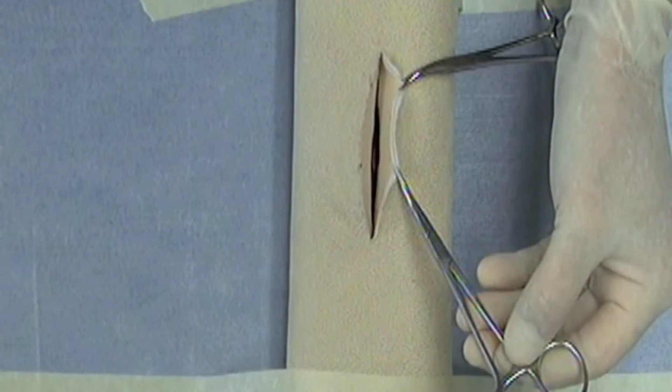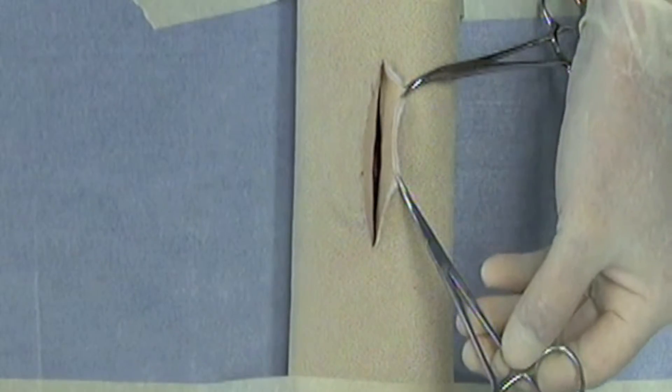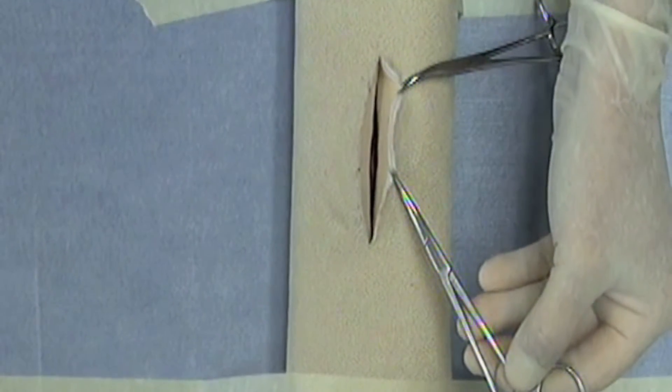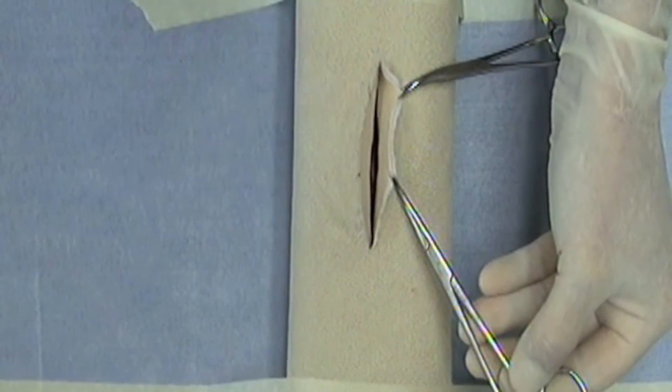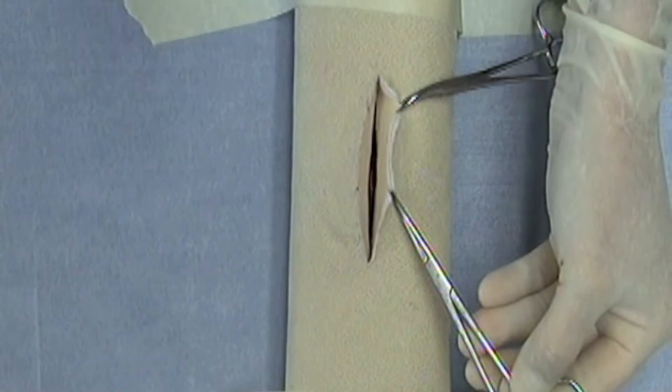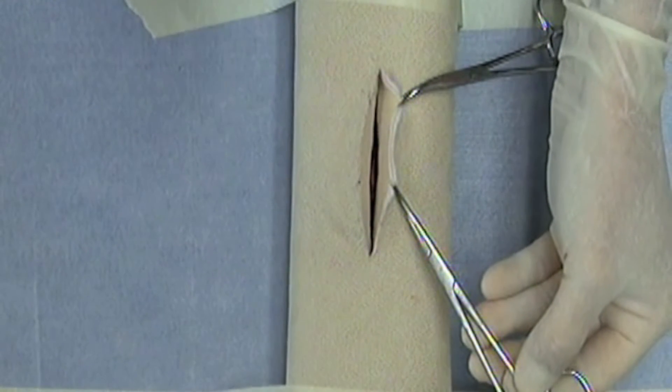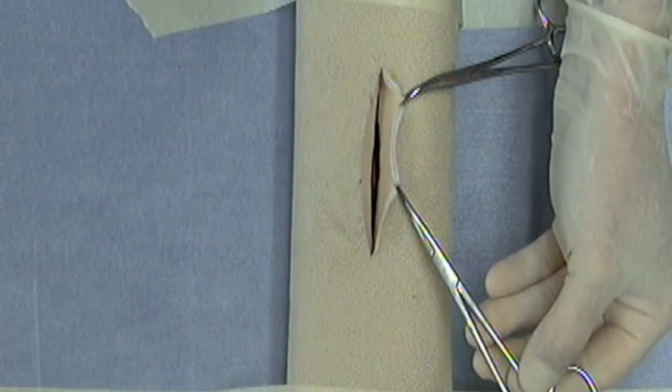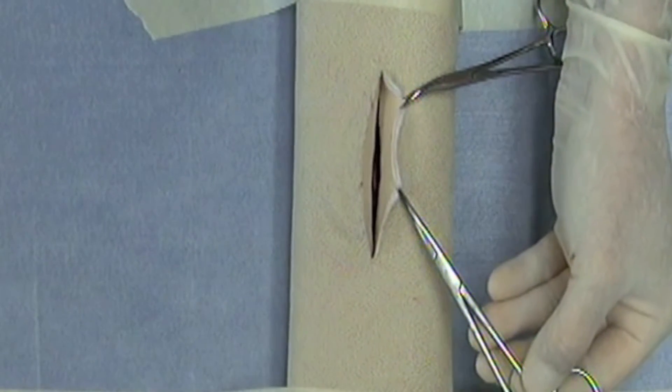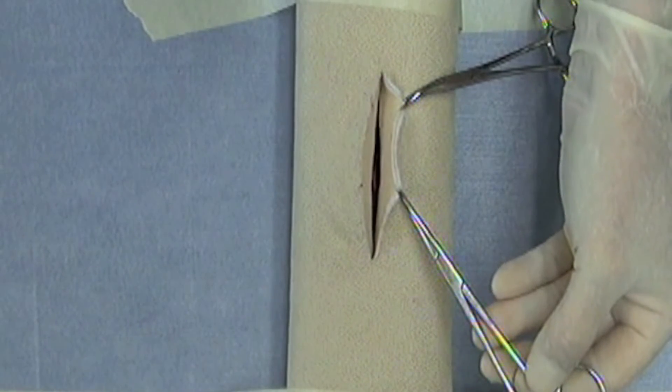You'll often times hear surgeons say tips up, tips up, meaning that you want the tip up in order to allow you to see and to make sure that you can clearly see that your suture is underneath the tips of the instrument and also obviously if it's underneath the tips of the instrument, it will be completely encircling the involved vessel.